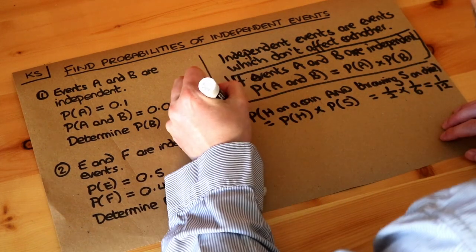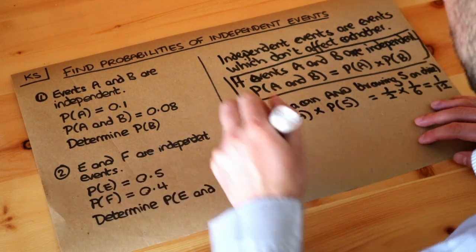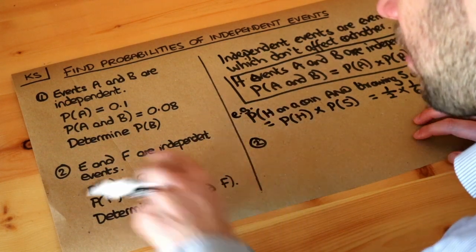So that's just an example. Now what about these questions? I'm actually going to start with the second one because it's slightly easier. So we want to find the probability of E and F happening.